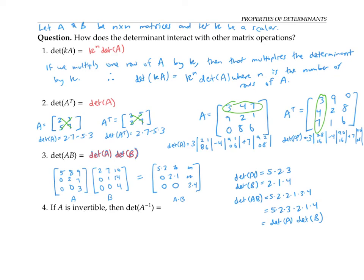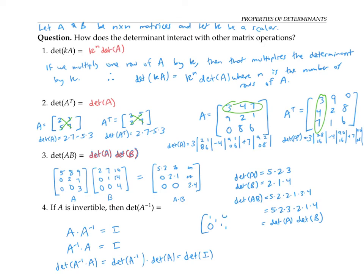Finally, if A is invertible, how does det(A inverse) compare to det(A)? We know A times A inverse equals the identity matrix I. Using the multiplication property, det(A inverse) times det(A) must equal det(I). Since I is a triangular matrix with ones on the diagonal, det(I) = 1. Therefore det(A inverse) = 1 / det(A). And there's no division-by-zero concern: if A is invertible, det(A) can't be zero, because its product with something must equal one.